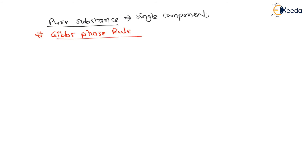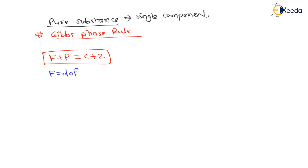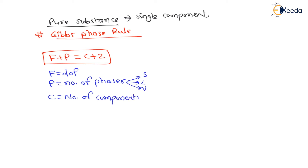Gibbs phase rule states: F + P = C + 2. Here, F is the degree of freedom, defined as the number of independent parameters required to specify the state of the system. P is the number of phases — solid, liquid, or vapor. C is the number of components. Since pure substance is considered a single component, C = 1 for pure substances.